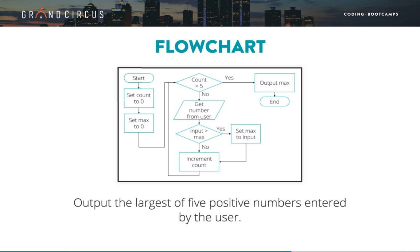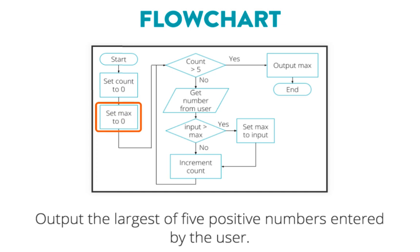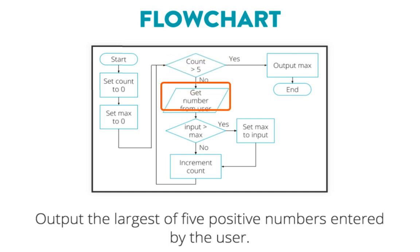Here's a flowchart describing an algorithm to output the largest of five numbers entered by a user. The start and end of the flowchart are indicated using ovals. From the start, we move to the first step, which is to create a count variable and initialize it to zero. Then we initialize another max variable to zero. The next step in the sequence is a decision point, indicated by a diamond shape. From here, there are two possible paths: if the count is greater than five, we'll proceed to the right; otherwise, we'll proceed downward. At this point, count is zero, so the next step is to get a number from the user. You'll notice this step is shaped like a trapezoid, which indicates an input step.